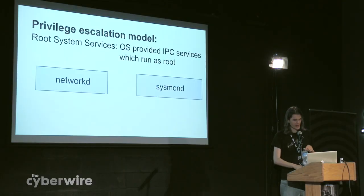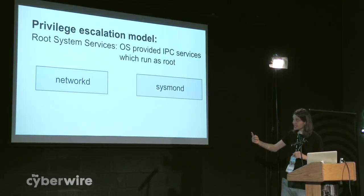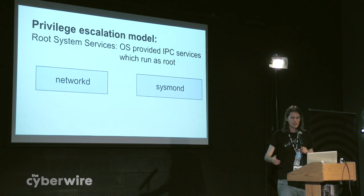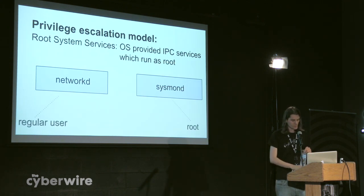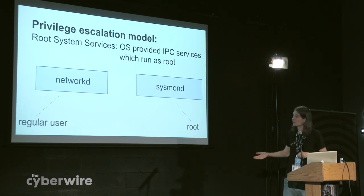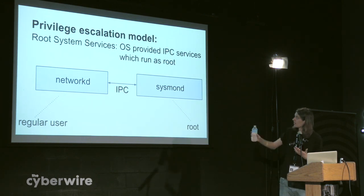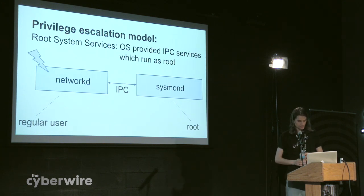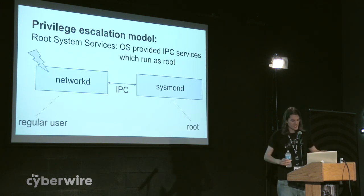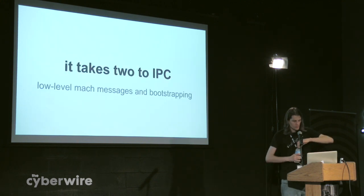Just to show you that diagrammatically: we have NetworkD on the left-hand side, which runs as a regular user, and sysmond doing system monitoring, which runs as root — unsandboxed running as root. Again, there is an IPC mechanism that lets us talk from NetworkD to sysmond. So if we get code execution in NetworkD, we can hop over into sysmond.